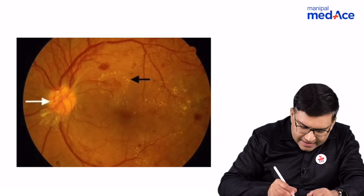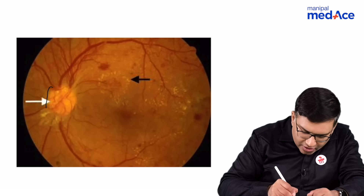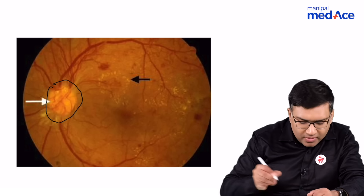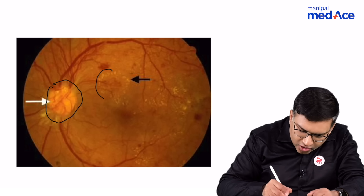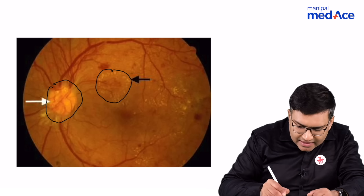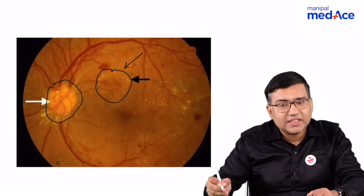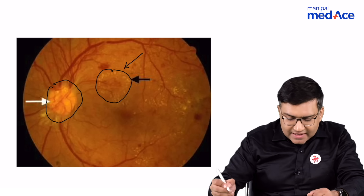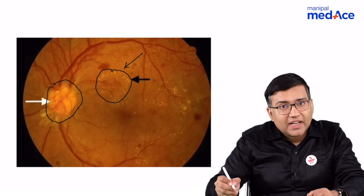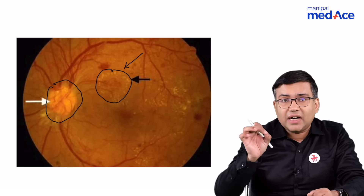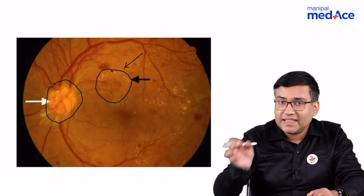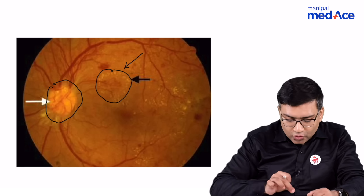In this image you can easily identify that there are new vessels being formed around the optic nerve head. I also want your attention towards this new vascularization which is in the retina. Whenever you have a proliferative diabetic retinopathy,